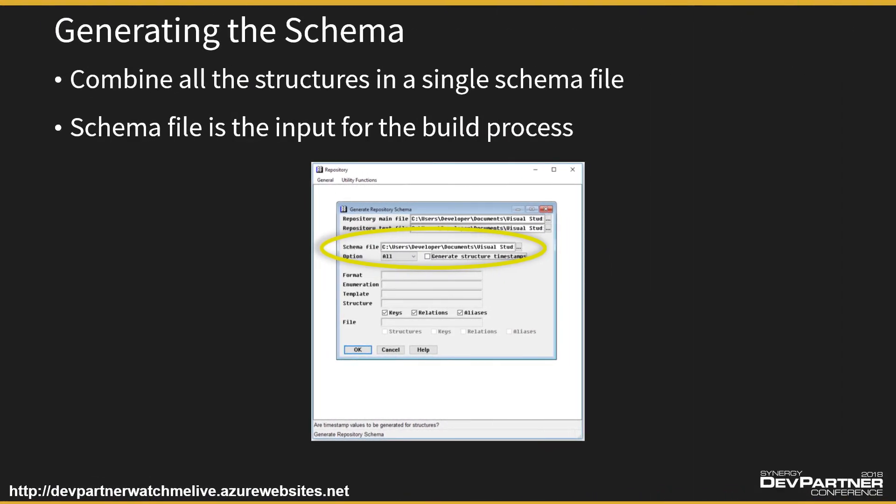Because we're going to use the repository program, and because Visual Studio uses the repository schema to build the repository files, the final task is to create our repository schema based on what we've just added using the repository program. This sounds a little strange — we've created the repository using the repository utility, but now we're going to generate the schema file which will build our repository for us. It's a bit backward, but that's just the way it is. The build system can't read the ISAM files — it can only read the textual schema file. So if you use the repository utility to update your repository, you must generate the schema file, and make sure you generate it in the right location.